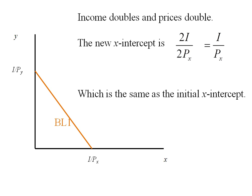I can look at the Y-intercept and see that it's going to be symmetric in this case. It will be 2I divided by 2PY, the 2's are going to cancel and my Y-intercept is also going to be the same.